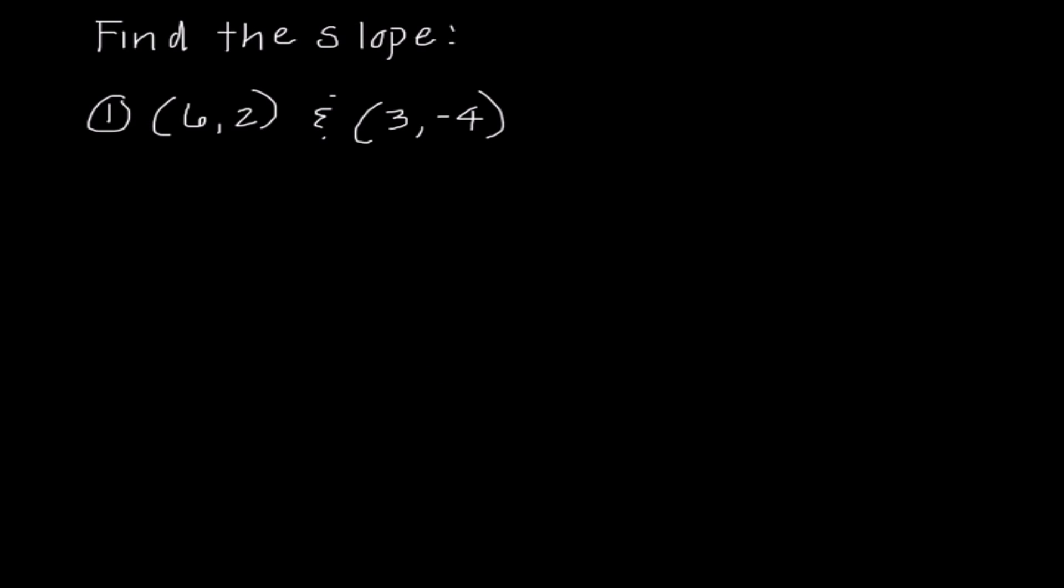One of the first things that we're going to do with slope today is given two specific ordered pairs, we need to find what is the slope of the line that contains both of these ordered pairs. So we need to remember that slope, we're going to use y sub 2 minus y sub 1 over x sub 2 minus x sub 1.